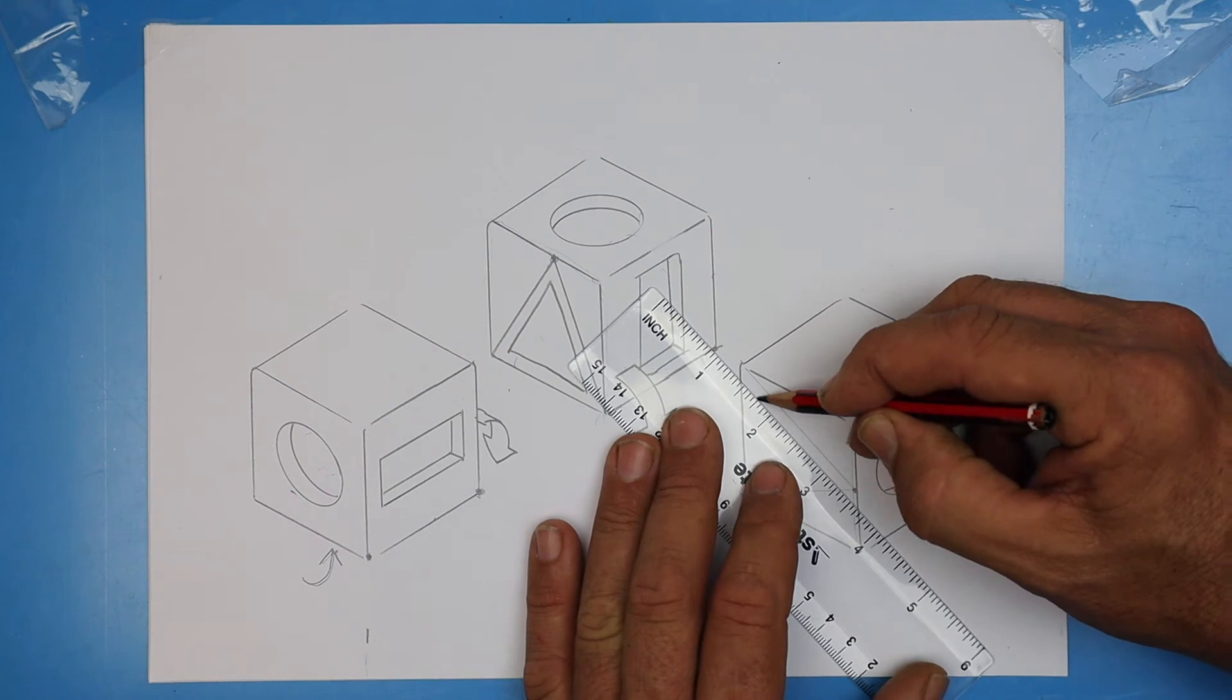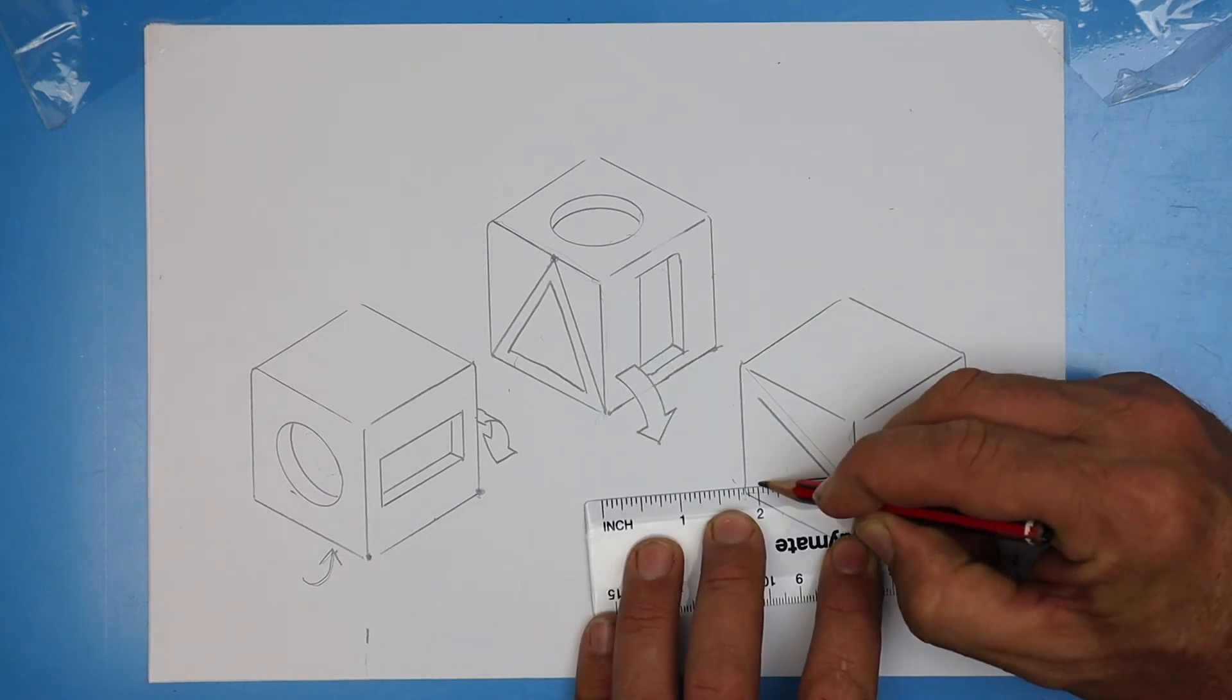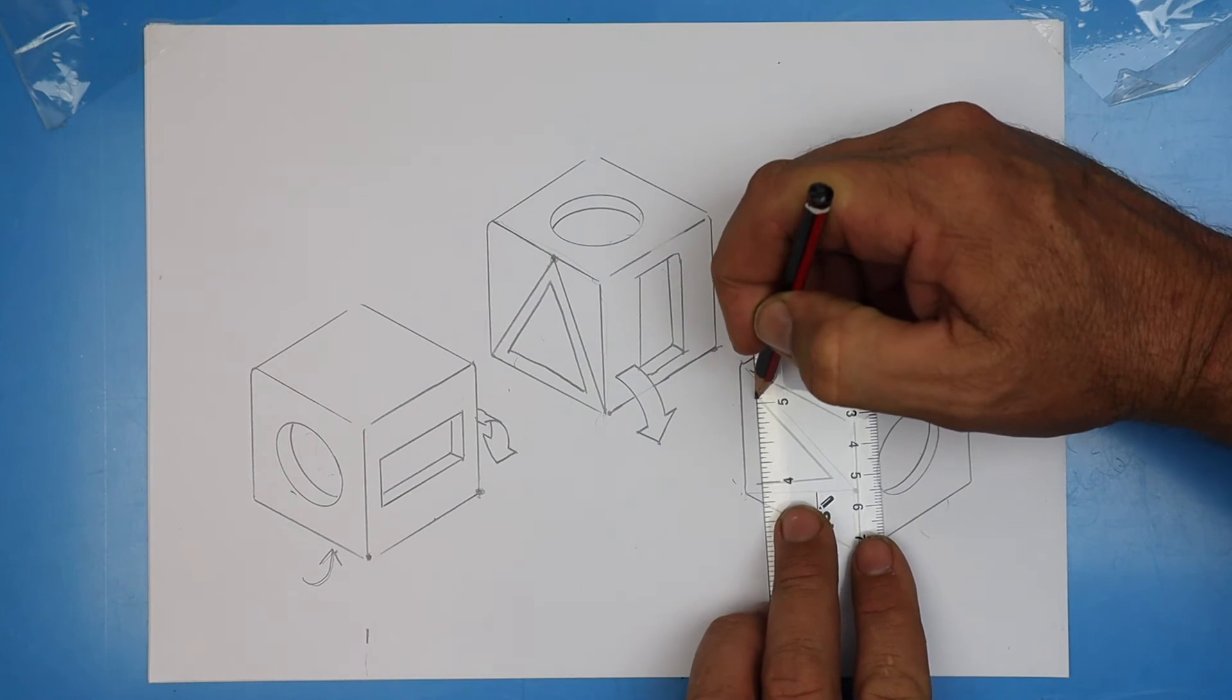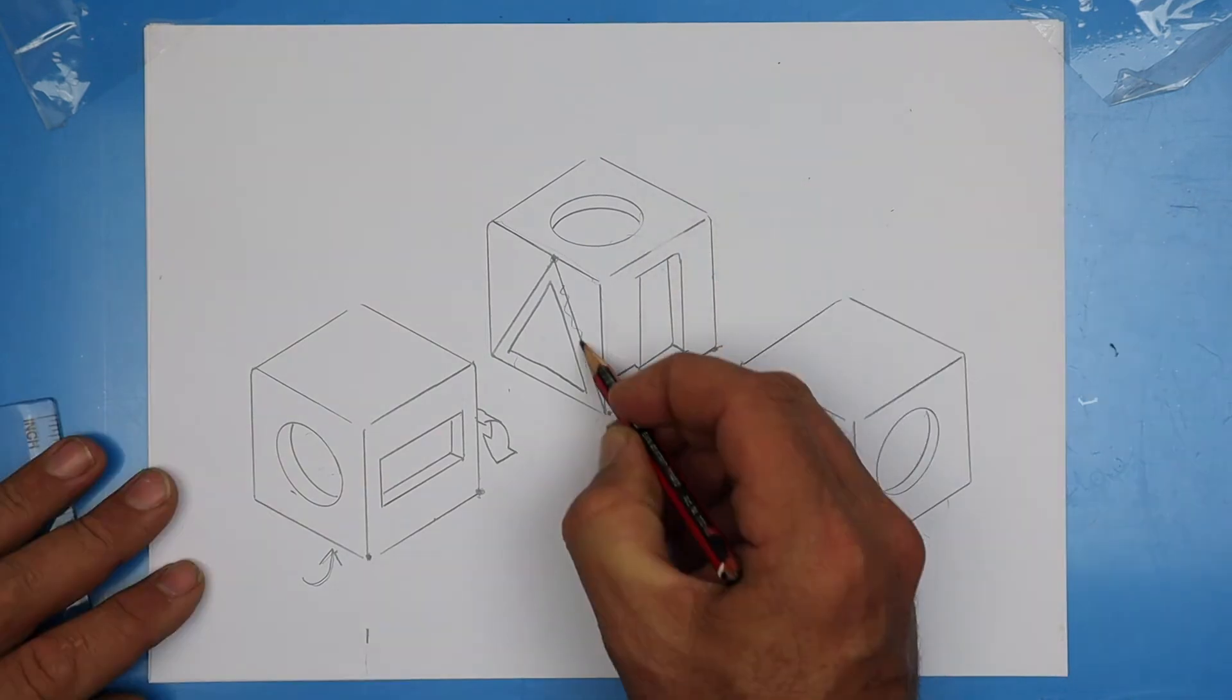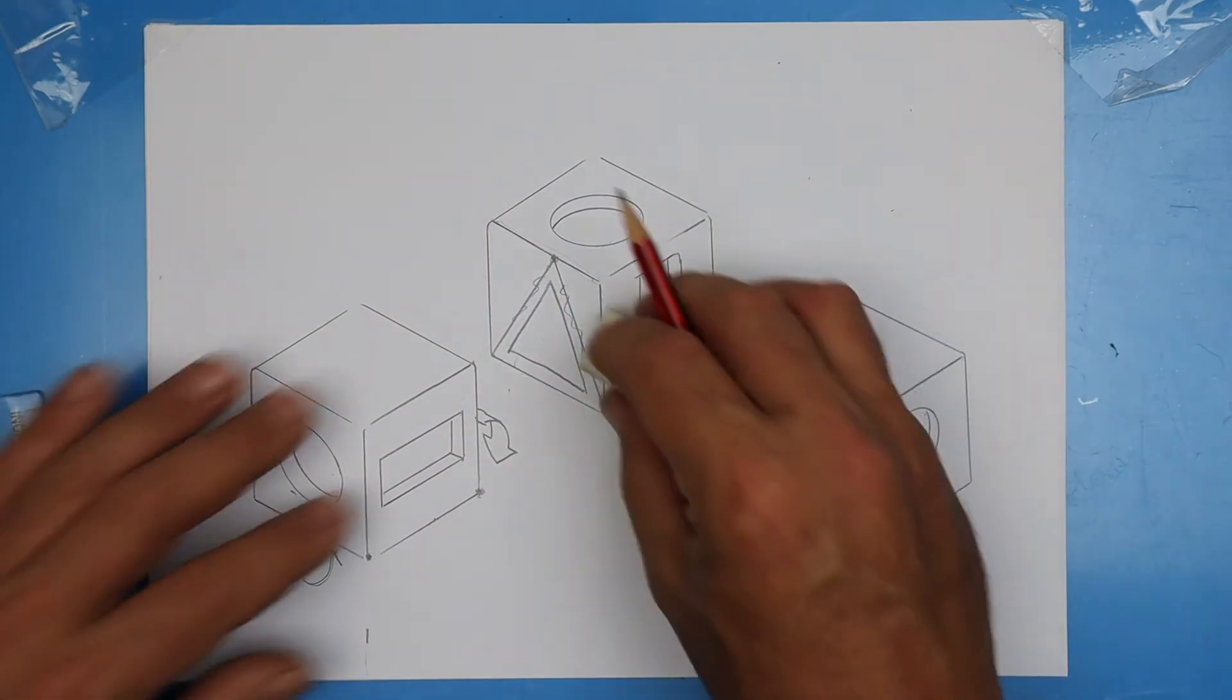If you want to use a ruler, you can neatly draw a triangle inside. I think I like the look of just a small triangle, so I'm going to go back and erase some of those lines.